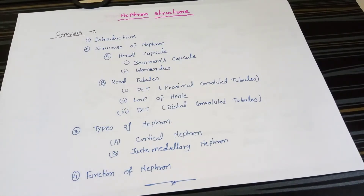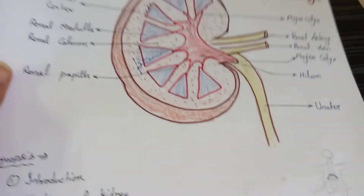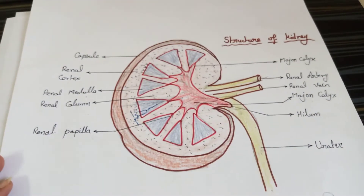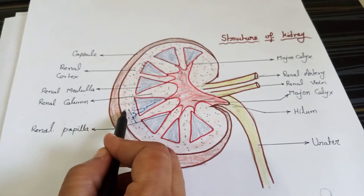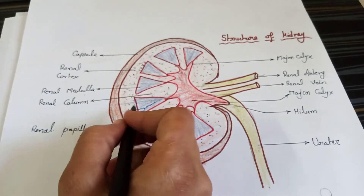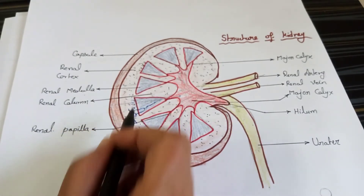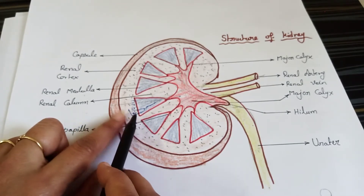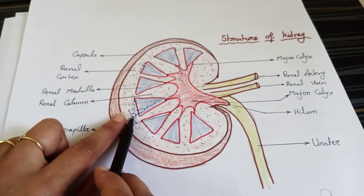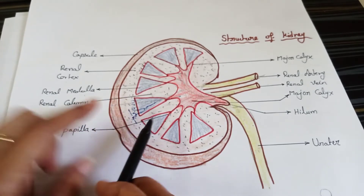Hello everyone, this is Rada and you are watching Knowledge Center. Today I will explain about the nephron structure. The nephron is the unit of the kidney — the kidney has millions of nephrons. In the last lecture I told you about the structure of the kidney, which has a cortex and a medulla. This nephron is a filtering unit of the kidney which filters urine from the blood.